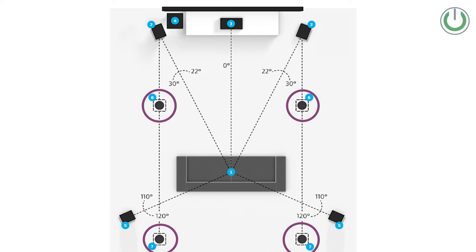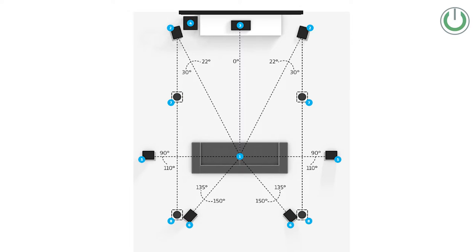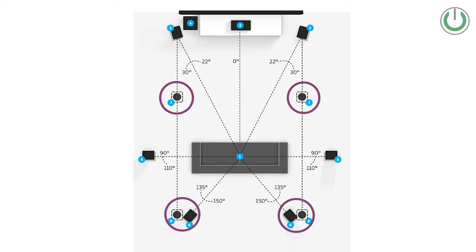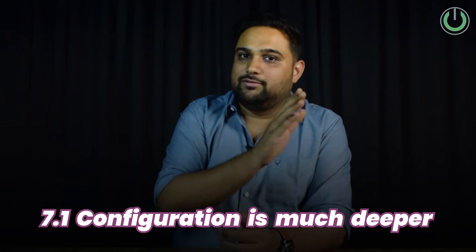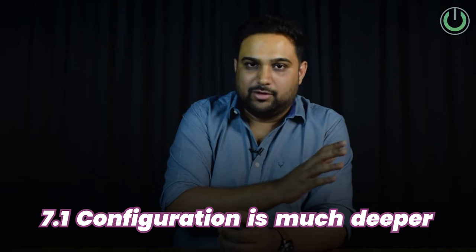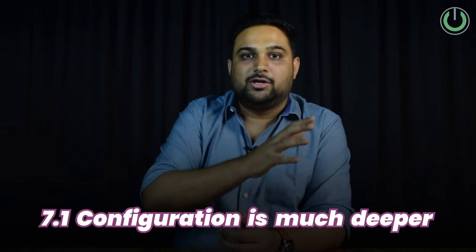If you add four speakers it becomes 5.1.4. Similarly, in a 7.1 if you add two speakers it becomes 7.1.2, and four speakers makes it 7.1.4. These are the terminologies used in Atmos, where the listener-level channels and the subwoofer stay the same as before, and we have simply added the height channels based on how many you install.